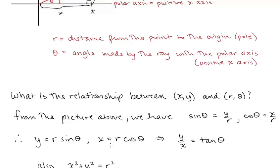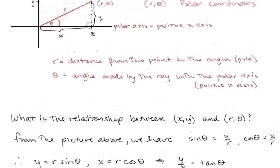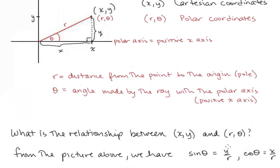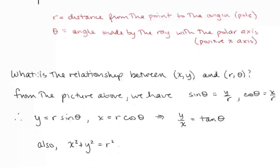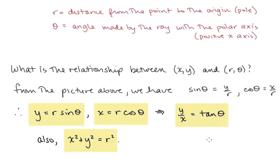Notice that with these two equations, we could divide y over x — the r's will cancel — and we'll get tan(θ). And one more relationship: if we take a look at the right triangle that we have here, we can see that x² + y² = r². So these are the equations relating Cartesian coordinates and polar coordinates.